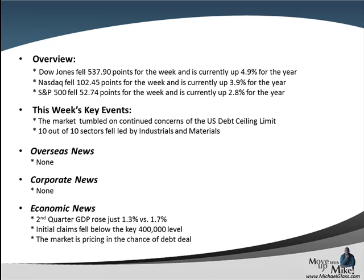On Friday we had the second quarter GDP come in at 1.3%, and the market was expecting 1.7%. On Thursday we had initial claims fall in below 400,000, and that's key if you're going to get the unemployment rate down. And of course, especially towards the end of the week, the market began to price in the chance — or the lack of a chance — of a debt deal.